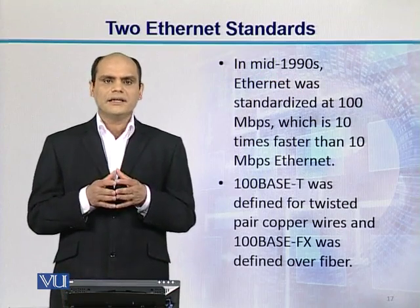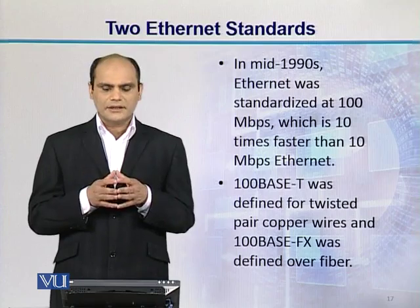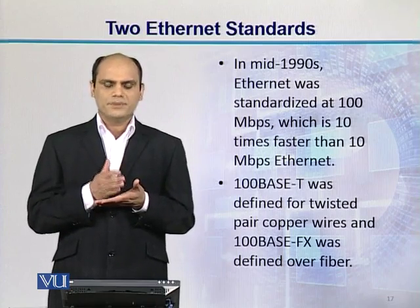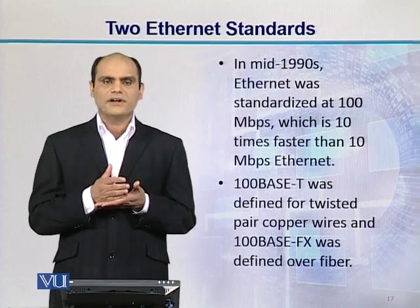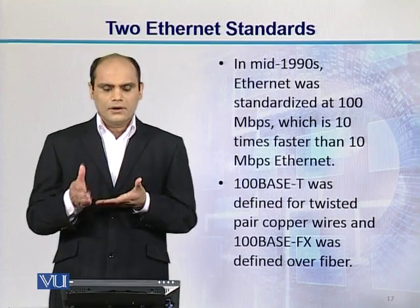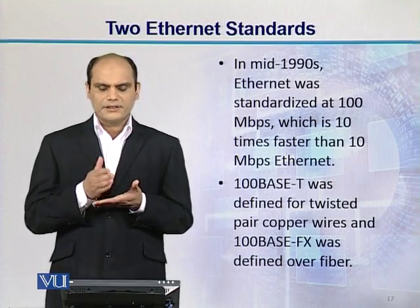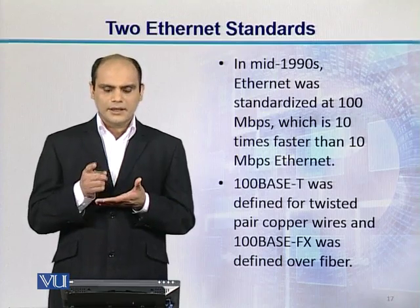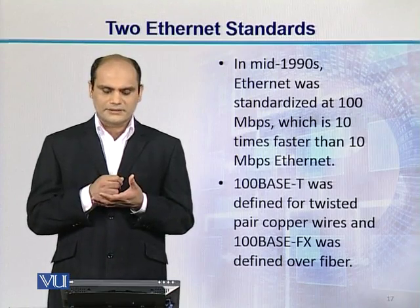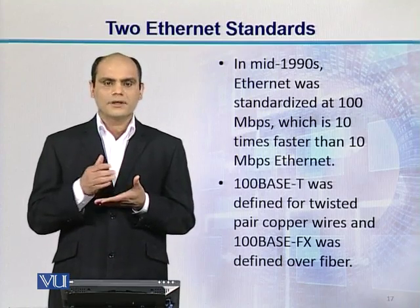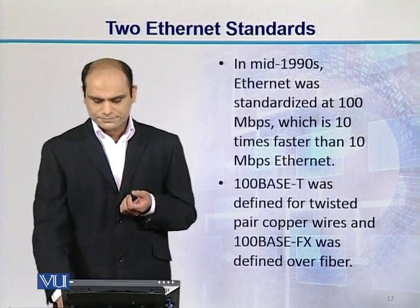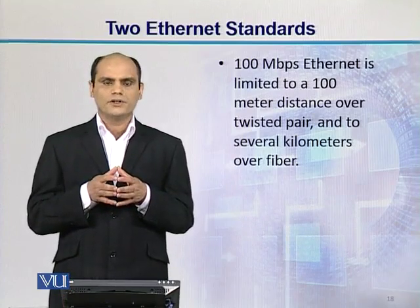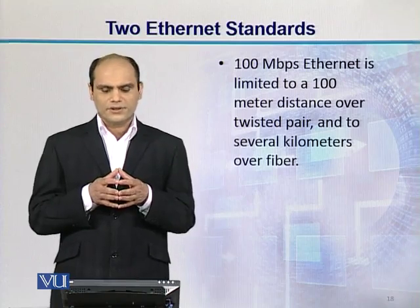Then in the mid-1990s, IEEE further enhanced the Ethernet standard, and we saw 100 megabits per second Ethernet — which was 10 times faster than the previous Ethernet. Its notation is 100BaseT, and 100BaseT was defined for twisted pair copper wires — the capital T denotes twisted pair copper wire. Then 100BaseFX was meant for fiber. 100 Mbps Ethernet is limited to 100 meters over twisted pair and to several kilometers over optical fiber.